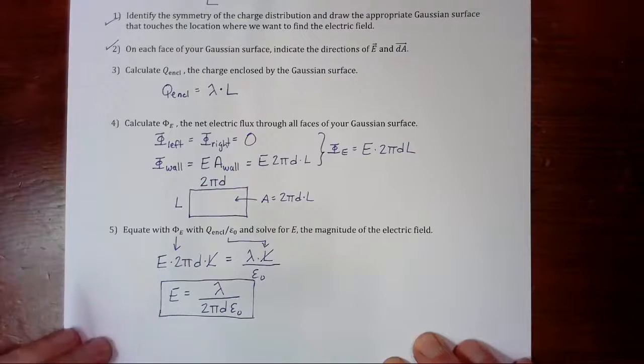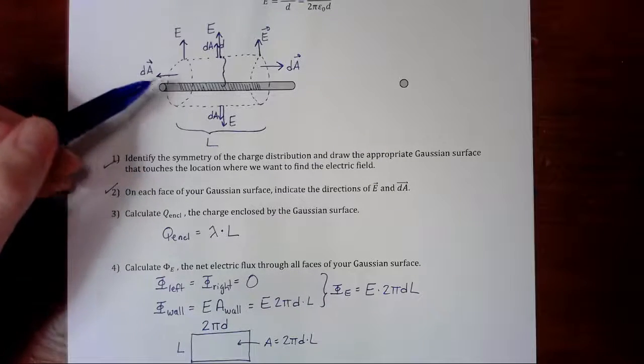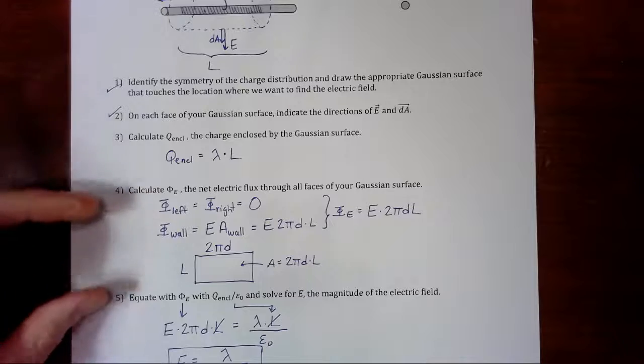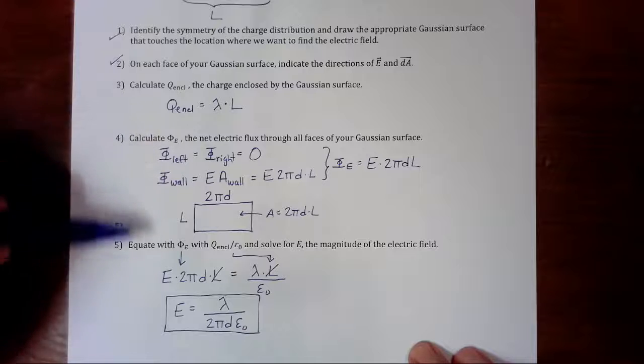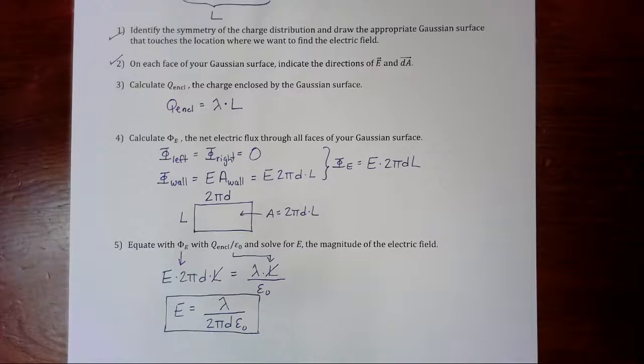Great. Much easier than integrating in my opinion. The trick, though, is to choose the appropriate Gaussian surface and calculate the flux through each one. So not much calculus, but it requires a little bit more conceptual thought. But I like this way a lot better, really, really elegant. Alright.